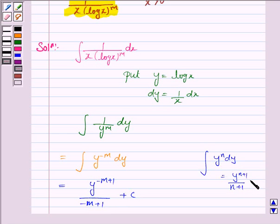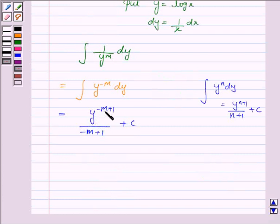Here n is minus m. So the integral is y to the power minus m plus 1 upon minus m plus 1 plus c.